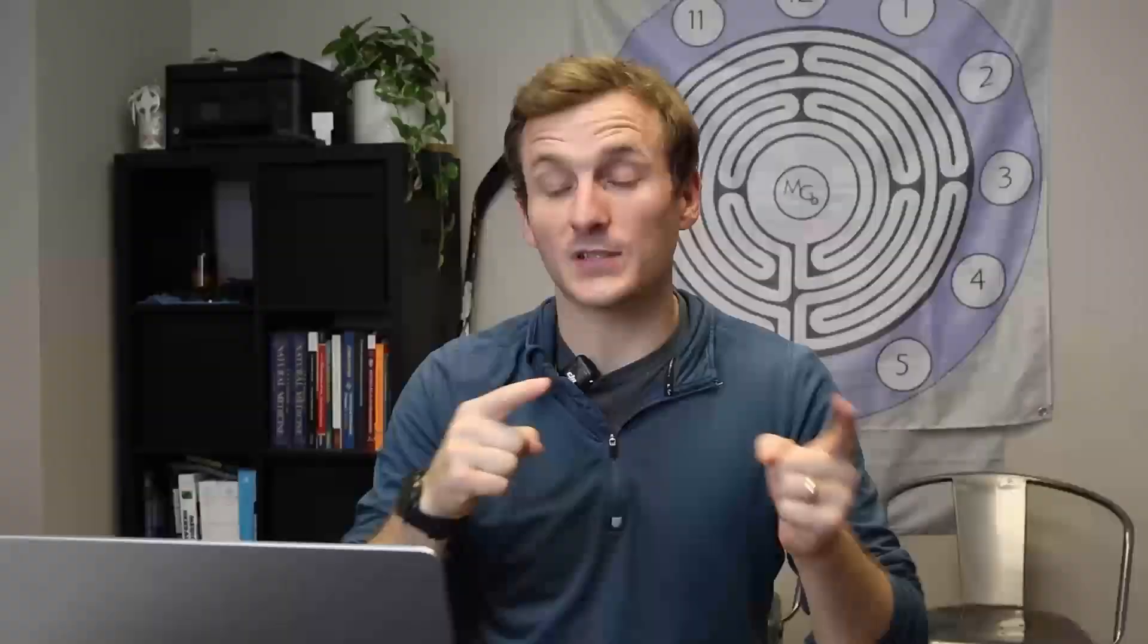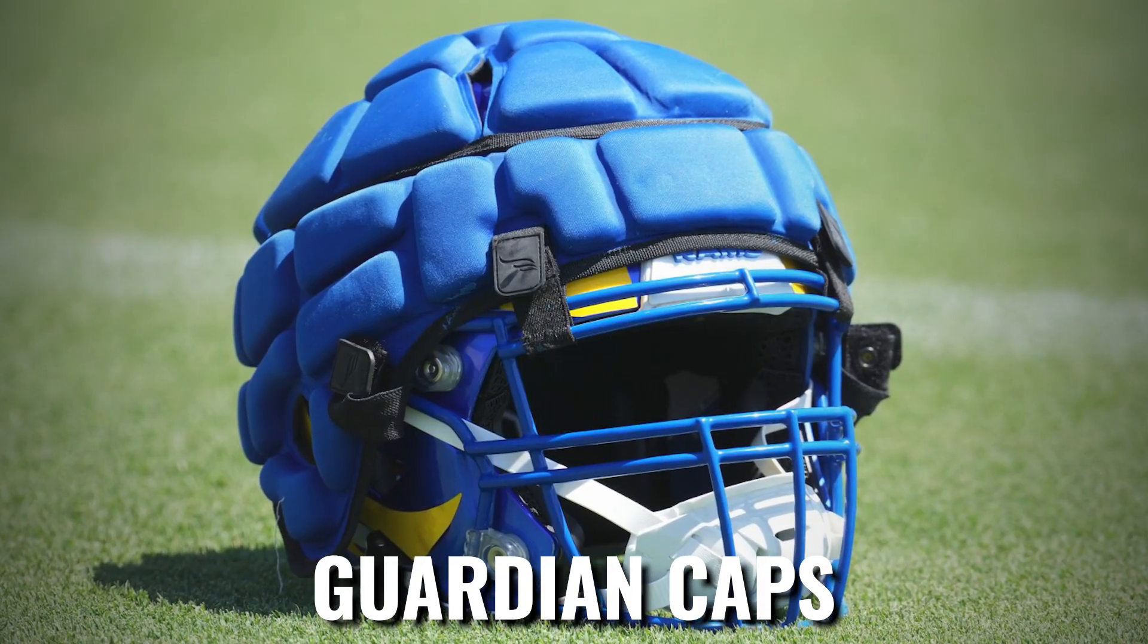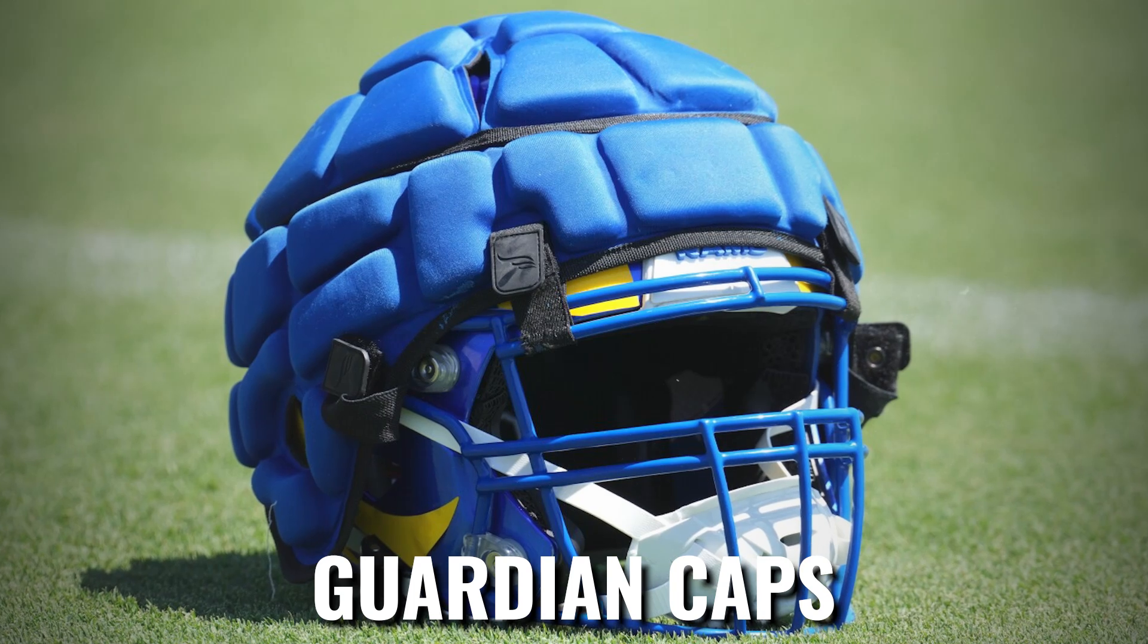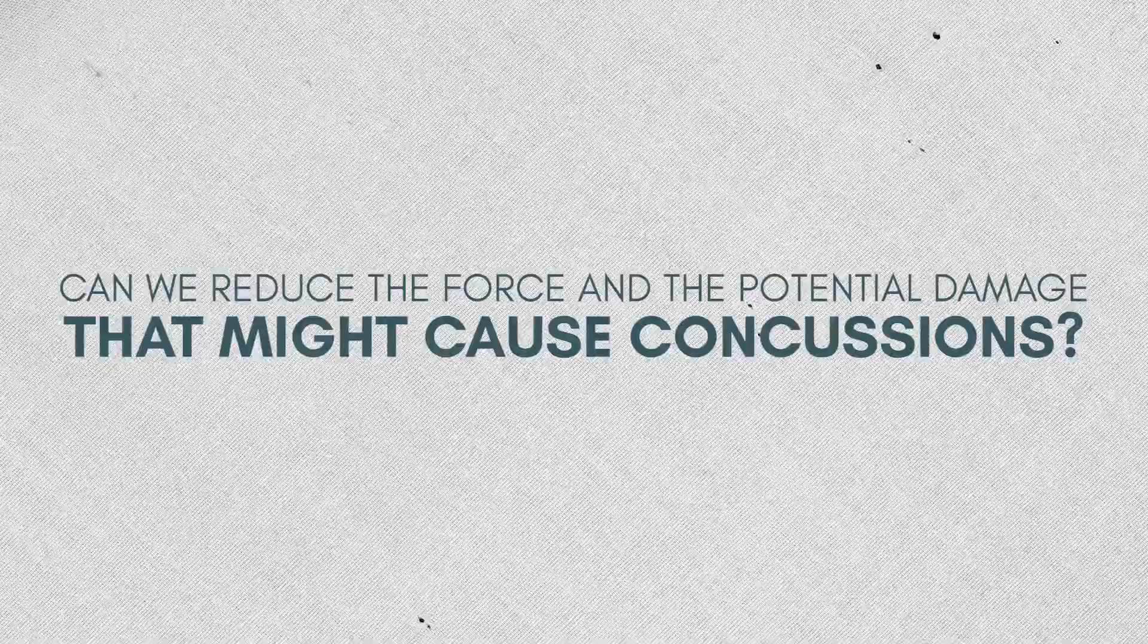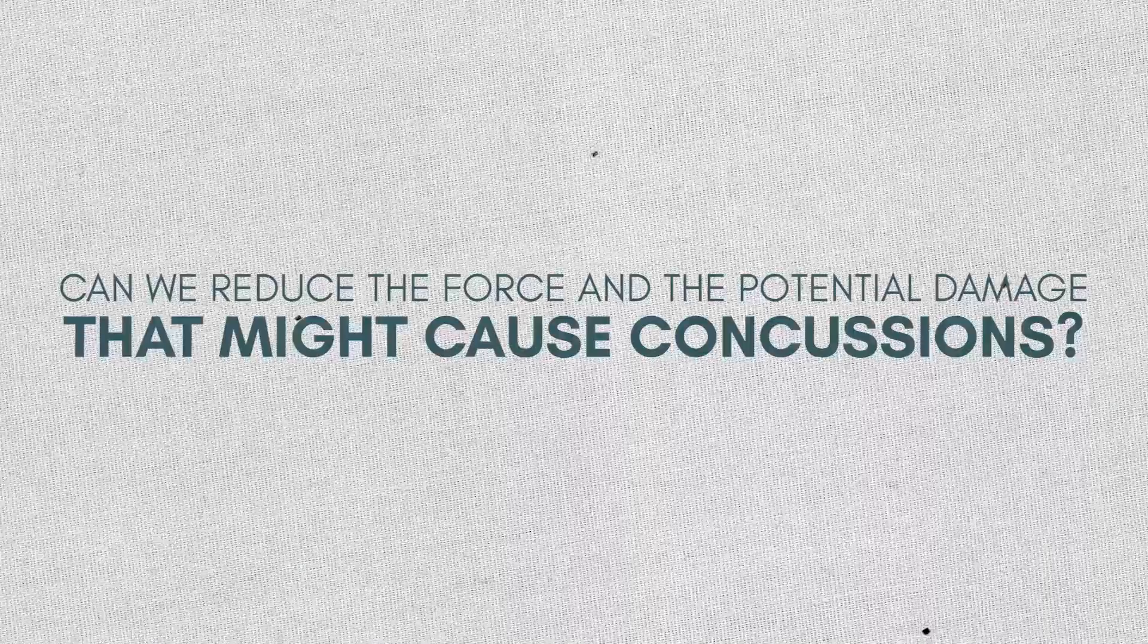Let's talk about what you actually need to know about these guardian caps. If you're unfamiliar, these are lightweight soft shell covers that go over the player's helmets and the whole goal is if we put this cover over, can we reduce the force and can we reduce the potential damage that might cause concussions? Can we reduce concussions by putting this soft shell cover over?